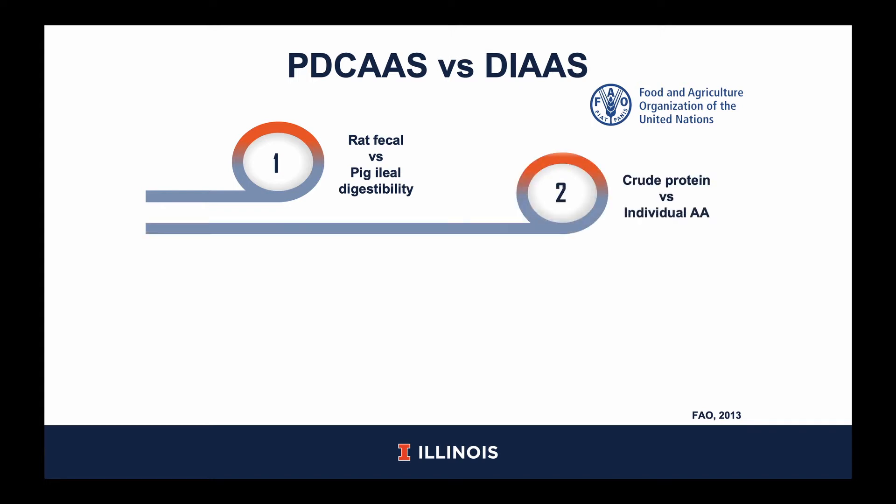Secondly, PDCAS uses a single crude protein digestibility value, whereas DIAAS utilizes the digestibility of each individual amino acid. This is important because amino acids differ in their digestibilities and the requirements differ for each individual amino acid.